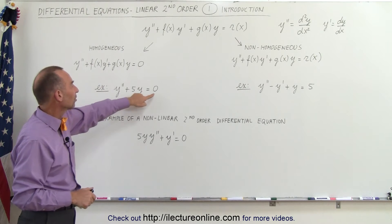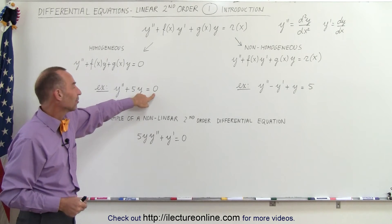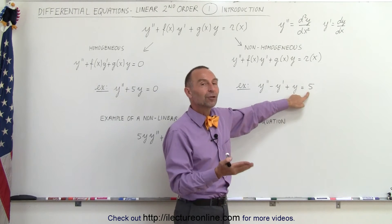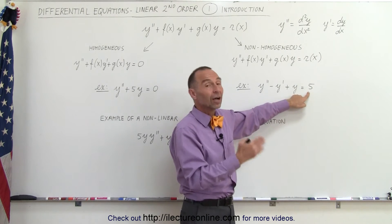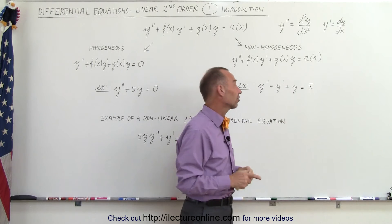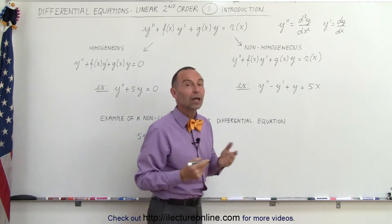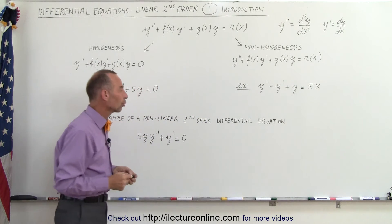Notice that this is a homogeneous type because on the right side of the equal sign we have a zero. This is non-homogeneous because on the right side we have a number other than zero. It could be a constant or it can be a function of x. For example, we can turn this into 5x, and that would then be an example of a non-homogeneous second order differential equation.